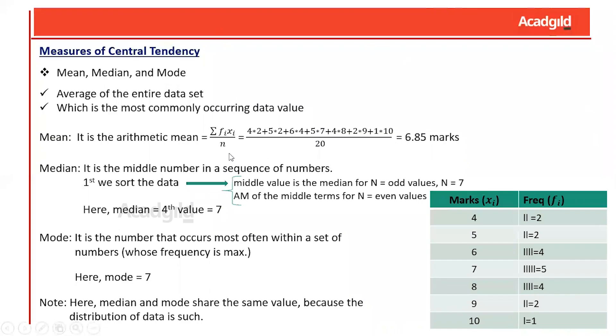Now let us come to measures of central tendency, which involve calculations of the mean, median, and mode. These parameters represent the average of the data set and the most frequently occurring data value. Mean is the arithmetic mean given by the formula: summation of fi times xi divided by n. Since the data value 7 is the most occurring value, the mean of 6.85 lies in its vicinity — frequency gives us a fair idea of what the mean should be.